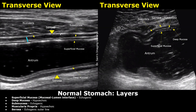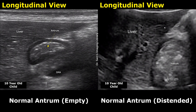We will also look at the five layers in this second image. You can see the innermost echogenic superficial mucosa, followed by the hypoechoic deep mucosa, then the echogenic submucosa. The fourth and thickest layer is the muscularis, and the outermost layer is the serosa. The image on the left shows the antrum empty with a collapsed appearance — correct wall measurement is not possible in an empty stomach. When the stomach is distended with water, then we can take the measurements.